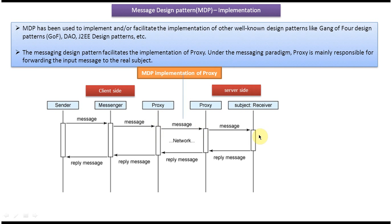The receiver will receive the message and, based on the instructions in the message, it will process the message. Whatever output the receiver produces will be written back to the server side proxy — you can see the reply message here. Then the server side proxy will send the reply message to the client side proxy, and the client side proxy will send it back to the messenger, and the messenger will reply back to the sender. This is how the whole communication takes place.